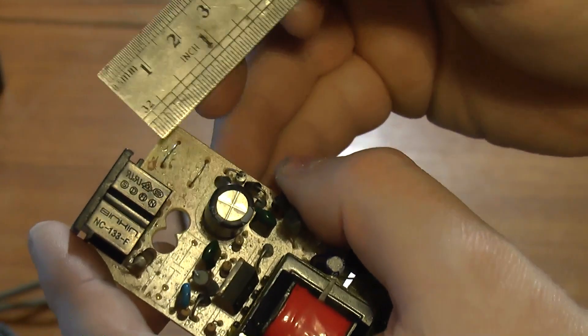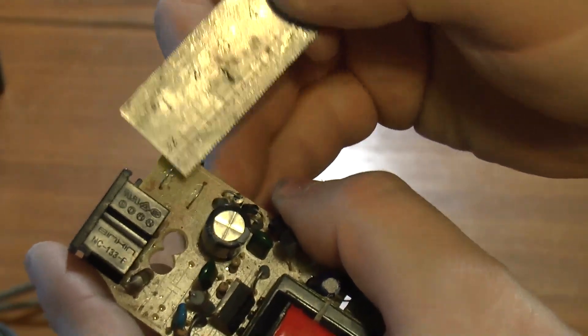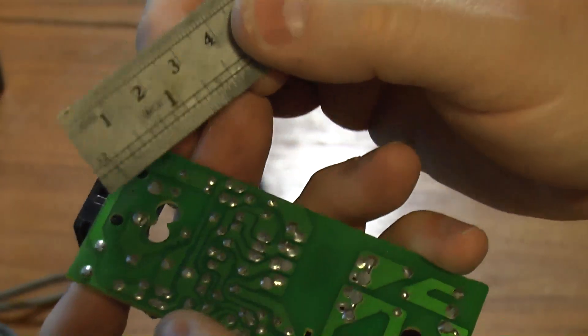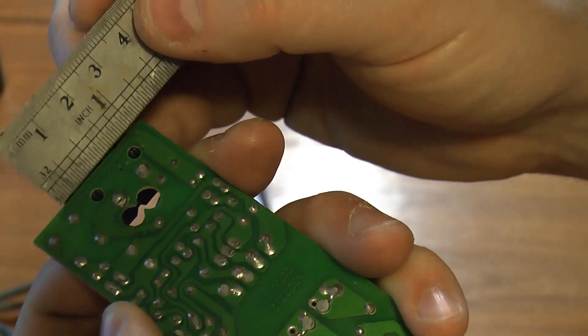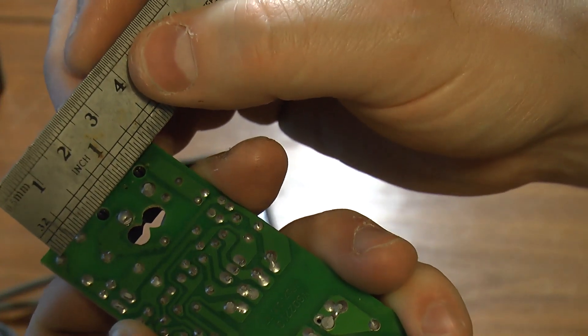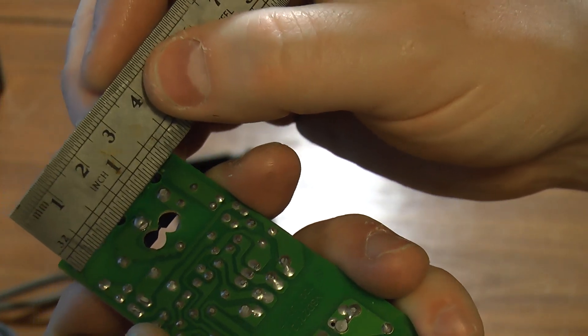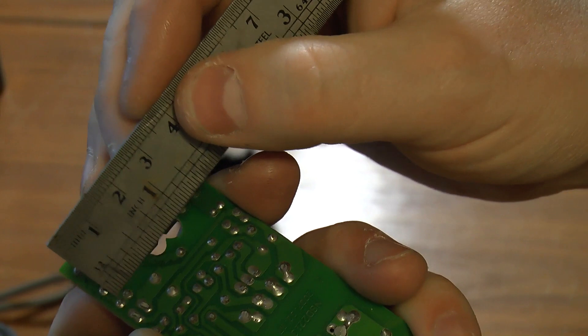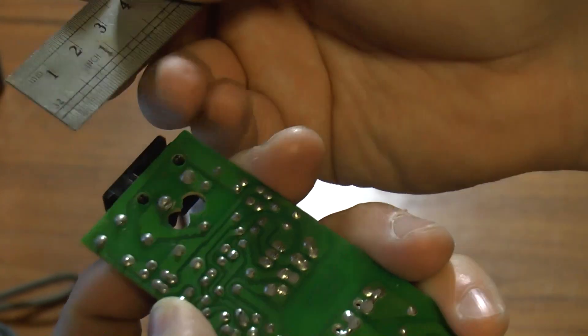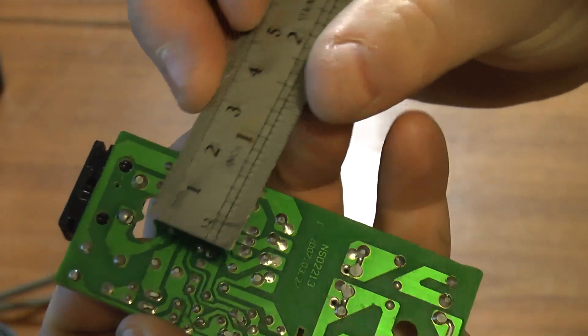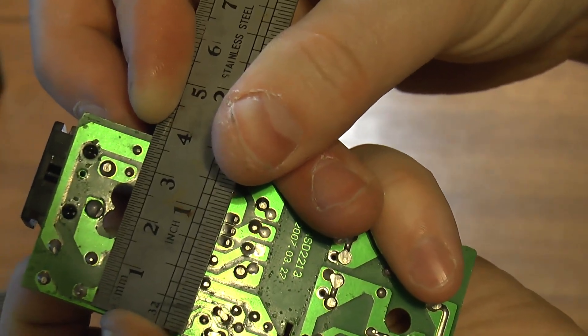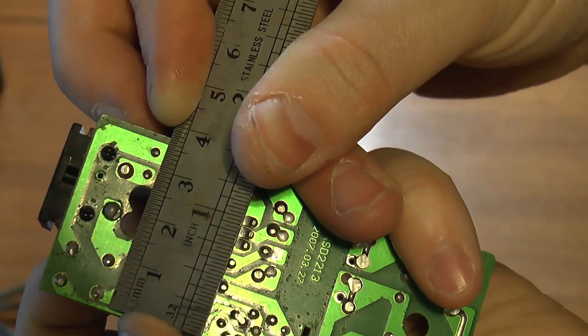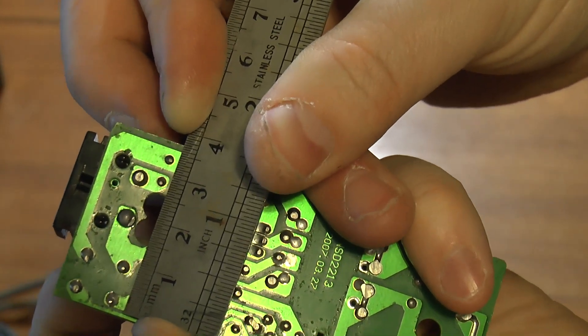On this board remember we've got live on the top here. That's neutral. So that means that there's 240 volts AC between this point here, this track and this track. Separation distance. I'd say that's about 2 thirds of a millimeter. And that's supposed to withstand 240 volts.